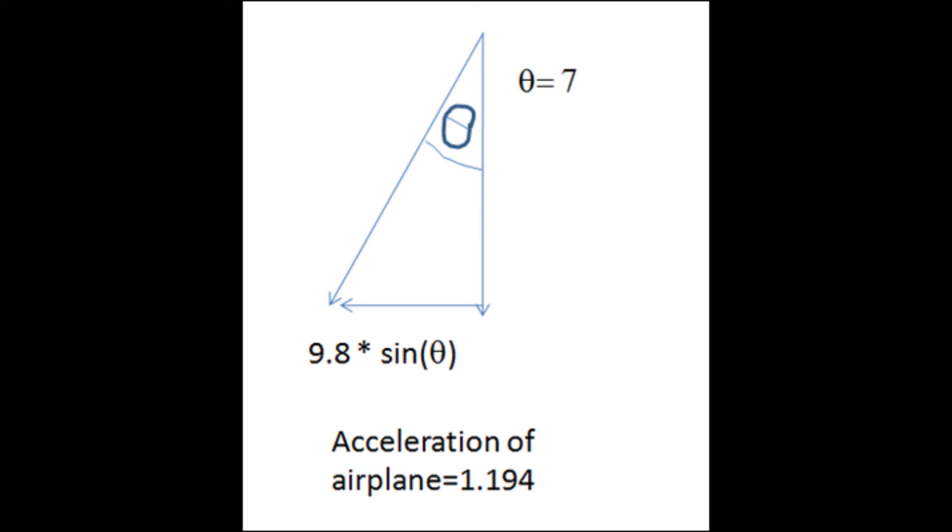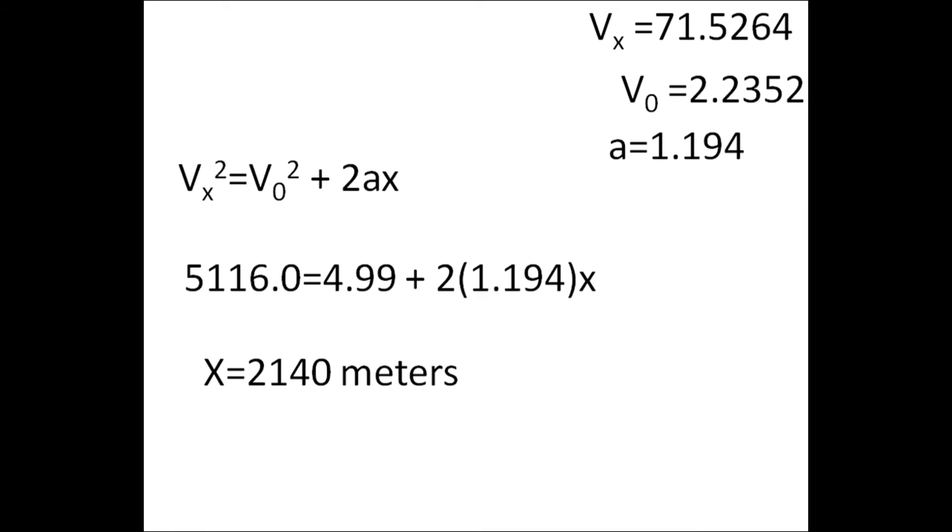Now I didn't at the time realize that we were doing miles per hour, so I had to convert it later, however the 1.194 is still correct. Here we can see that the v sub x and v sub 0 are 71 and 2 respectively.